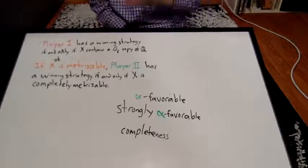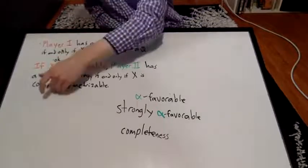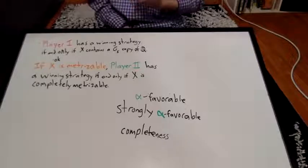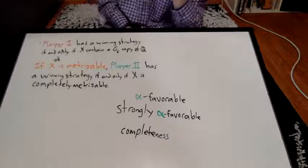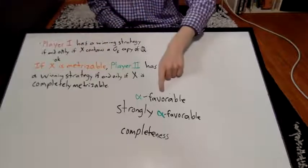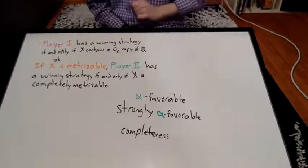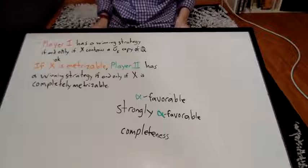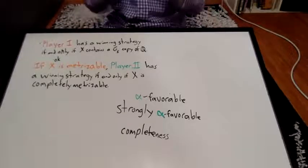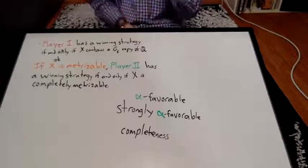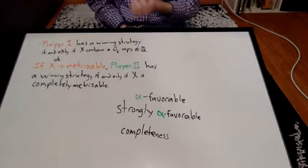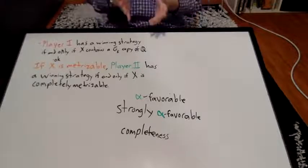The final note I want to make is that I mentioned earlier that if X is metrizable, then saying that it's complete is the same as saying that player 2 has a winning strategy on the Shokei game on that space. That actually raises a very interesting question because completeness is a property that we can only talk about for metric spaces, but alpha favorability, that's a property we can talk about for any topological space. This means it's not unreasonable to use alpha favorability as an extension of the idea of metric completeness to general, non-metrizable topological spaces. And again, I think that's amazing.